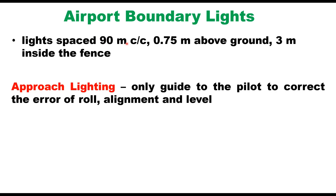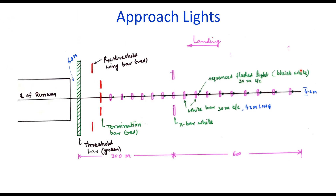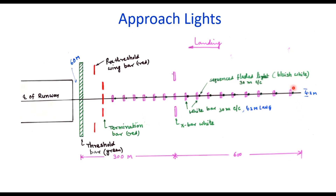Then comes approach lighting, which is the only guidance to the pilot to correct errors of roll, alignment, and level. ICAO has standardized the approach light system. The approach light extends 900 meters before the runway end. Transverse bars, which are 4.2 meters wide, are spaced 30 meters center to center and are white in color. They are provided for 900 meters from the runway threshold and give suitable information to the pilot on alignment and roll. A cross bar, which is 30 meters wide at 300 meters from the runway threshold, gives information to the pilot that he is 300 meters away from the runway threshold.